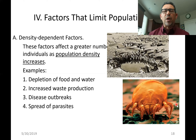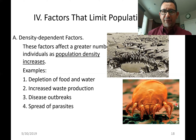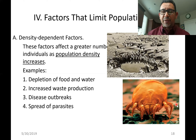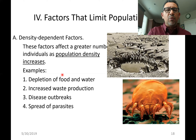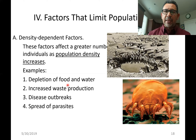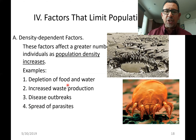So look at all of these problems that can happen because of overcrowding. This is why we call these density-dependent factors. The more dense, the more overcrowded the population is, the more severe these factors are going to be, and the more likely the population will be going down.